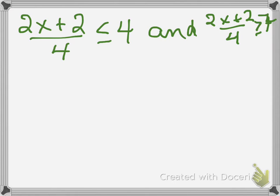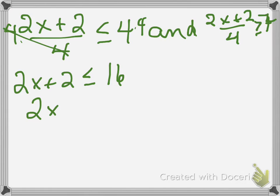Now I can solve. To get the x by itself, I've got to multiply both sides by 4 to get that out of the denominator. So I've got 2x plus 2 is less than or equal to 16. I'm going to subtract 2 from both sides. So I have 2x is less than or equal to 14, because 16 minus 2 is 14. Then divide both sides by 2 to get x by itself, and x is less than or equal to 7.